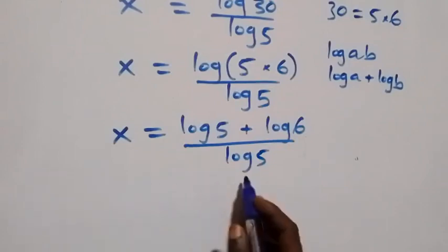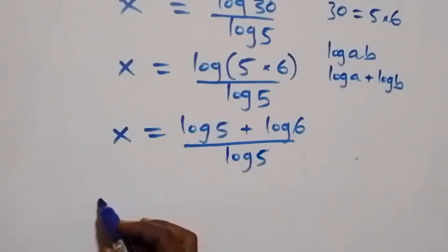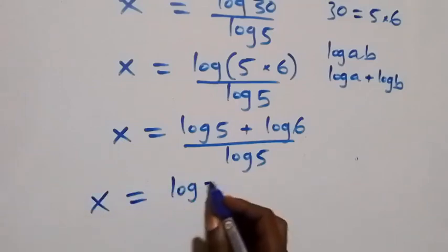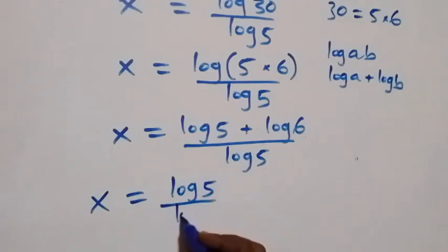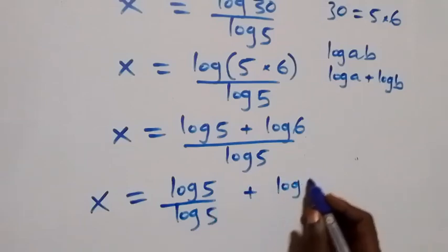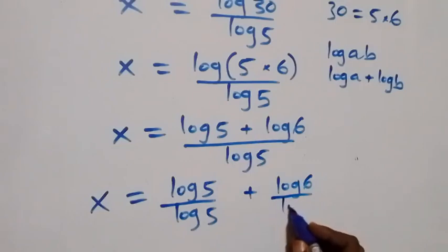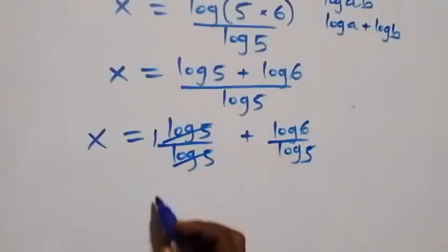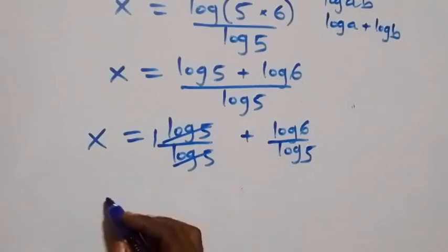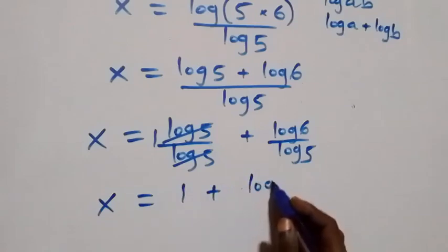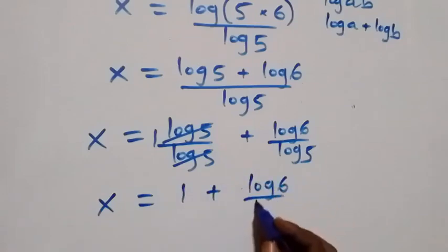Then here we can separate this fraction into two fractions and we have x equals to log 5 over log 5, plus log 6 over log 5. This implies that log 5 cancels each other giving 1, so this becomes x equals to 1 plus log 6 over log 5.